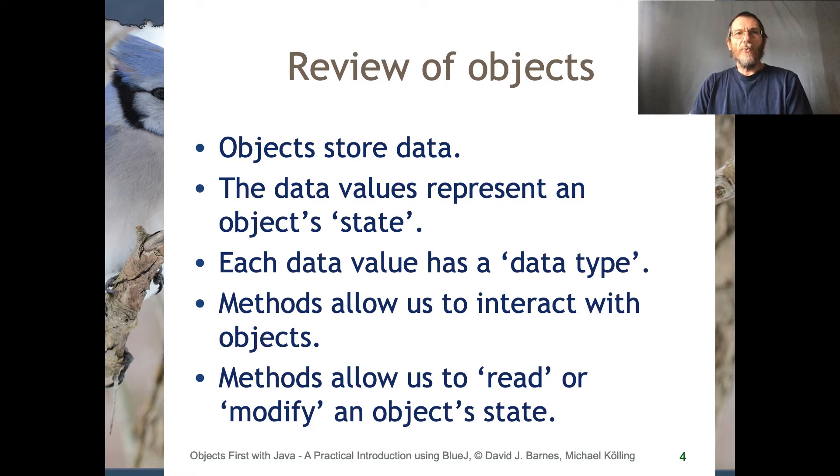In previous videos we've mentioned the related concept of data type. We introduced the data types string and integer, in other words text and number. So an object such as a triangle stores numbers representing its position and size, and a piece of text representing its color.